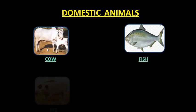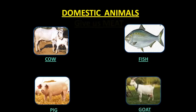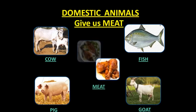Some of the domestic animals like cow, fish, pig, and goat give us meat. We eat the meat of cow, fish, goat, and pig. These animals give us meat.